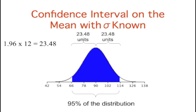This figure shows that 95% of the means are no more than 23.48 units, or 1.96 standard errors, from the mean of 90. Now consider the probability that a sample mean computed in a random sample is within 23.48 units of the population mean of 90. Since 95% of the distribution is within 23.48 of 90, the probability that the mean from any given sample will be within 23.48 of 90 is 0.95. This means that if we repeatedly compute the mean m from a sample and create an interval ranging from m minus 23.48 to m plus 23.48, 95% of these intervals will contain the population mean of 90.